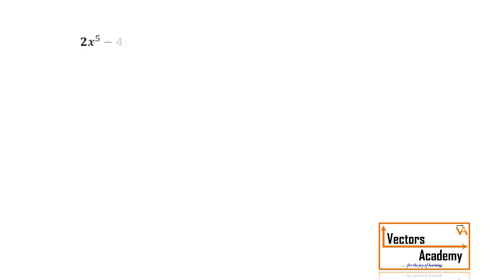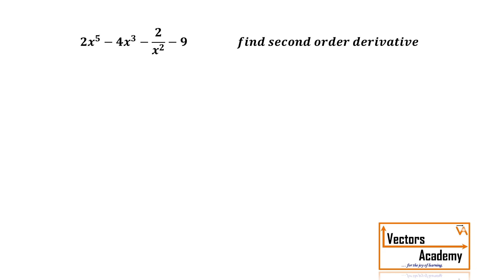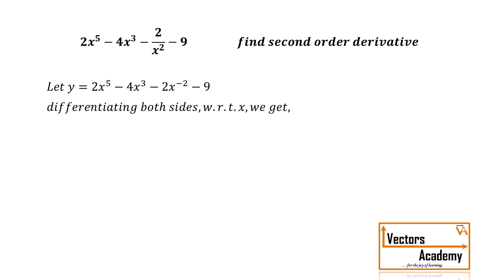The question states: 2x⁵ minus 4x³ minus 2 by x² minus 9. We have to find its second order derivative. We will consider the equation to be y and differentiate both sides normally. So the first order derivative will be 10x⁴ minus 12x² plus 4 into x raised to minus 3.